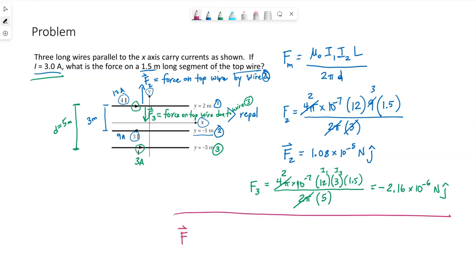So the overall force that the top wire experiences is the vector sum of these two vectors. So 1.08 times 10 to the negative 5th minus, because this is in the negative direction, negative y direction. So essentially I'm factoring out the newtons and the j-hat. That leaves a negative 2.16, and then the 1.08.